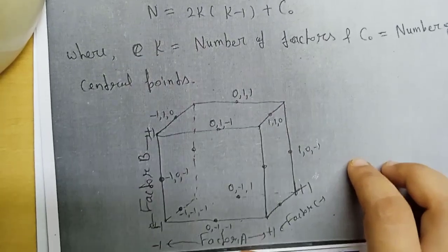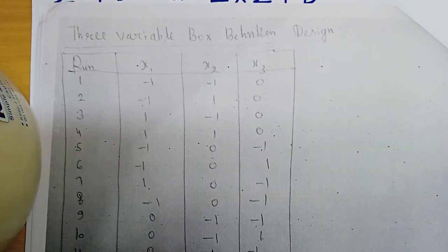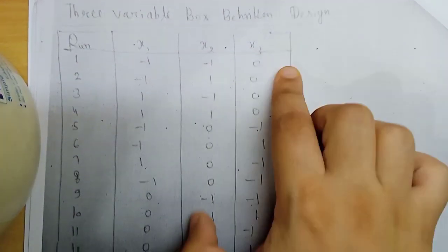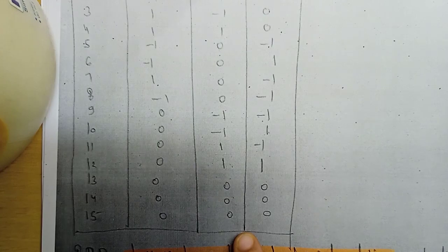We can represent this in a cube with factors A, B, and C. In this case, we use x1, x2, x3 with values -1, 1, and 0 for 15 runs.